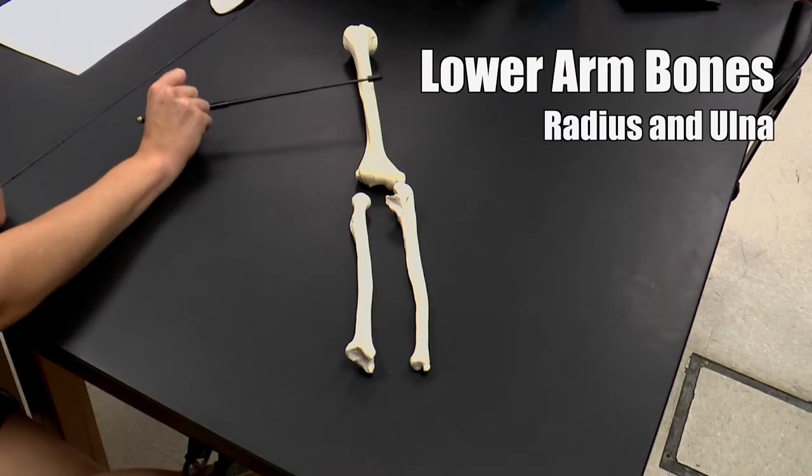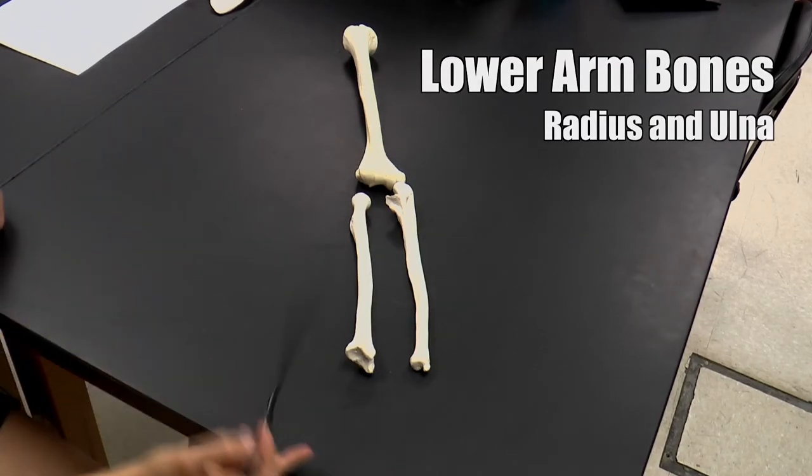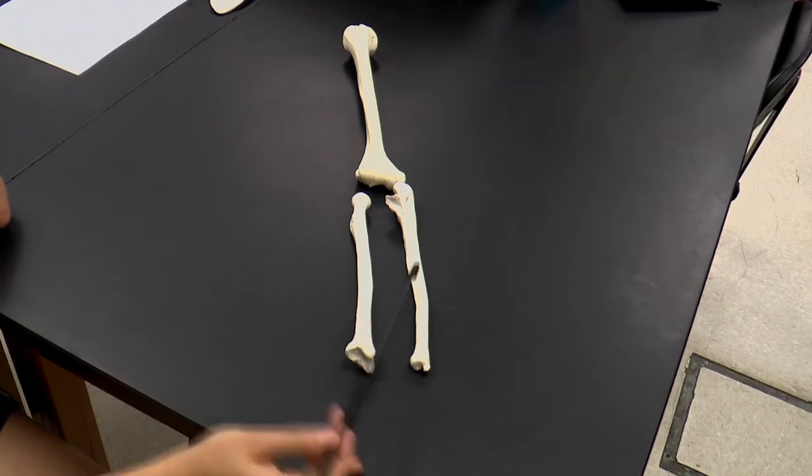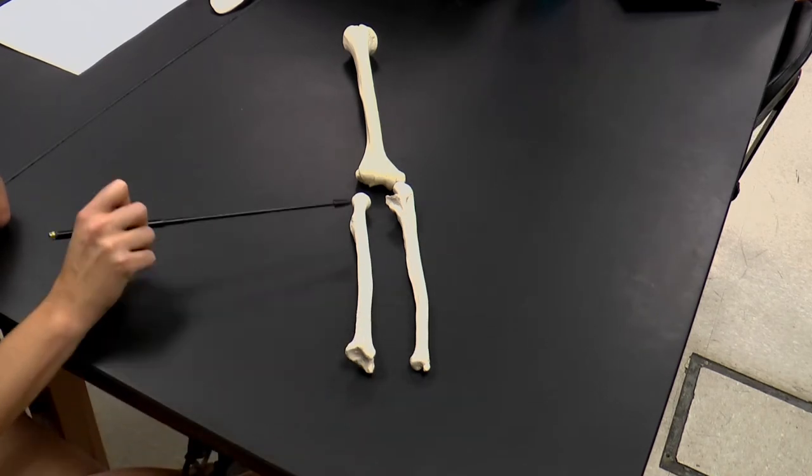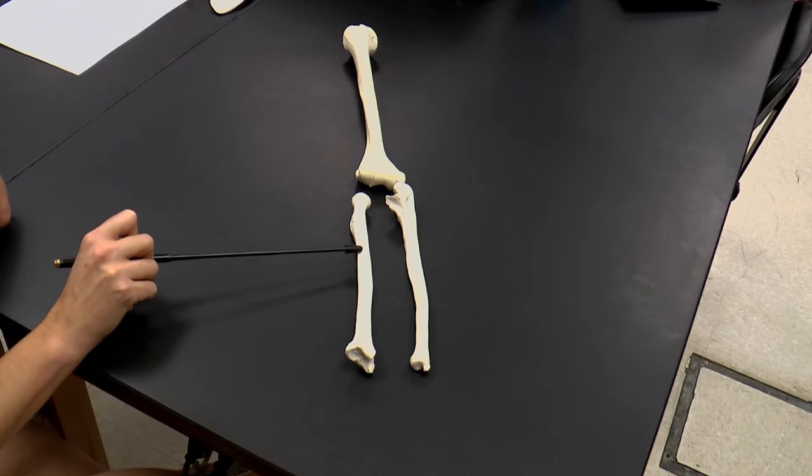So you can see here the distal portion of the humerus and then the two bones of the forearm. So here we have our ulna and our radius. The radius is going to be laterally located, thumb side.